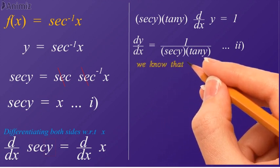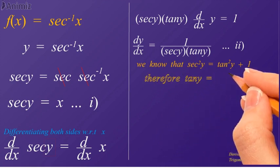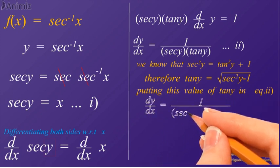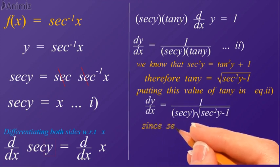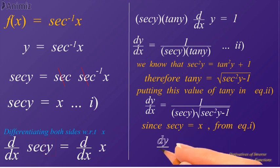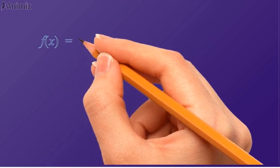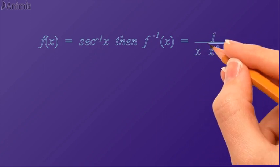We know by trigonometric identities that secant squared y is equal to tangent squared y plus 1. Therefore, the value of tangent y will be the square root of secant squared y minus 1. Putting this value in equation 2, we have dy/dx is equal to 1 divided by secant y into the square root of secant squared y minus 1. Since secant y is equal to x from equation 1, therefore replacing secant y by x. Hence in this way we got the derivative of secant inverse x, which is 1 divided by x into the square root of x squared minus 1. When f(x) is equal to secant inverse x, then its derivative f′(x) will be equal to 1 divided by x into the square root of x squared minus 1.